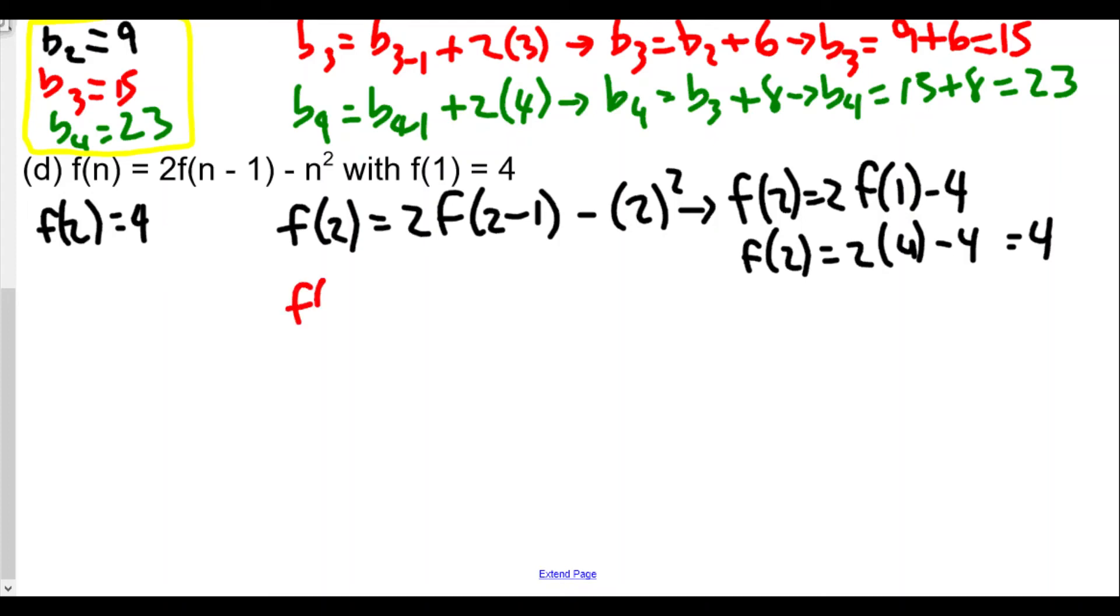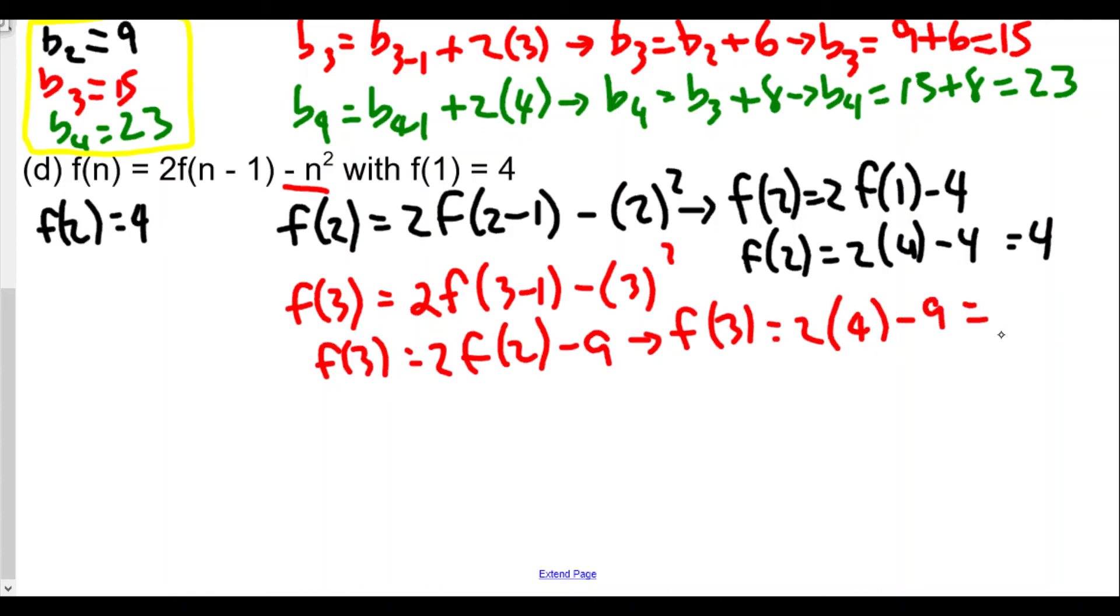And we continue with f3. Our third term is 2 times—or when n is 3—2 times f(3-1) minus 3 squared, because again, this whole n squared here. And so we're going to get f3 is equal to 2 times f2 minus 9, which means f3 is equal to 2 times 4 minus 9, or negative 1. So f3 equals negative 1. Our third term equals negative 1. And it's possible to have negative numbers in our sequence.